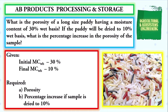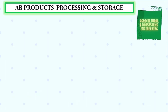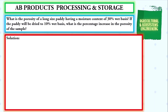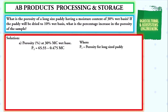After identifying the given and the required for our problem, we proceed with our solution. The first value we will solve is the porosity at 30% moisture content wet basis. To solve for the porosity for a long-sized paddy, we will be using the formula: P1 is equal to 65.55 minus 0.475 times MC, where P1 is the porosity for a long-sized paddy and MC is the moisture content in wet basis.